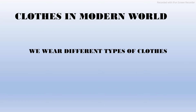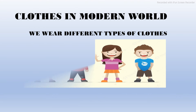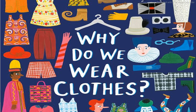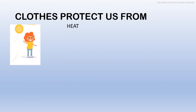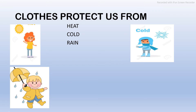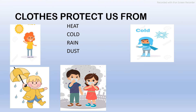In this modern world, we wear different types of clothes such as shirt, t-shirt, pants, trousers, etc. Have you ever thought why do we wear clothes? Here is the answer: they protect us from heat in summers, cold in winters, rain, dust, and insect bites.